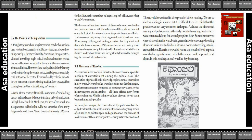Under colonial rule, many of the English-educated class found new Western ways of living and thinking attractive. But they also feared that a wholesale adoption of Western values would destroy their own traditional way of living. Characters like Indulekha and Madhavan showed readers how Indian and foreign lifestyles could be brought together in an ideal combination.